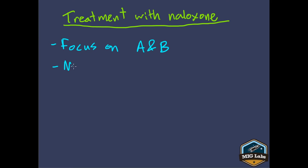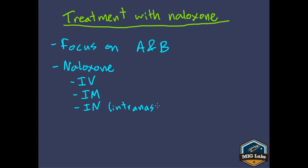When giving naloxone, there are a few different routes. You've got IV — classic intravenous — IM, intramuscular if you can't get an IV, and IN, which is intranasal. The intranasal route uses a mucosal atomizer device, or MAD — a small cone that fits on the end of your syringe and converts the liquid stream into a mist that can be absorbed by the nasal mucosa.